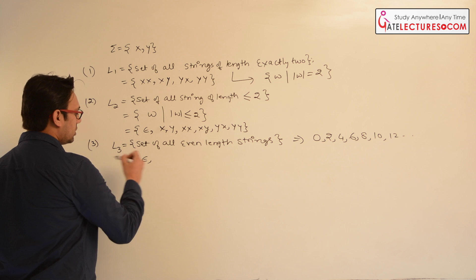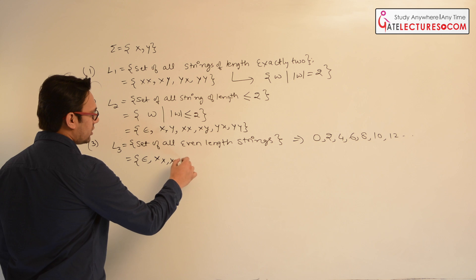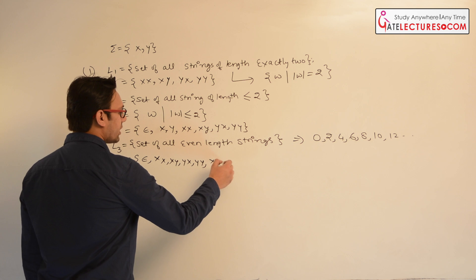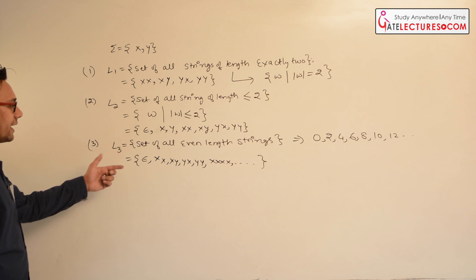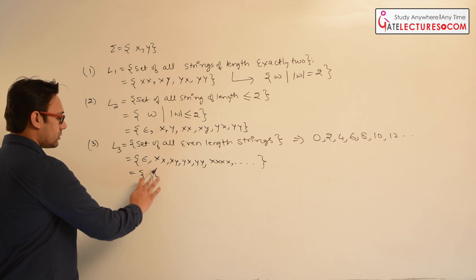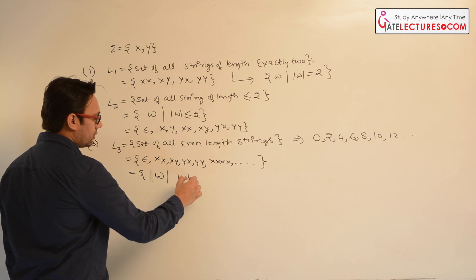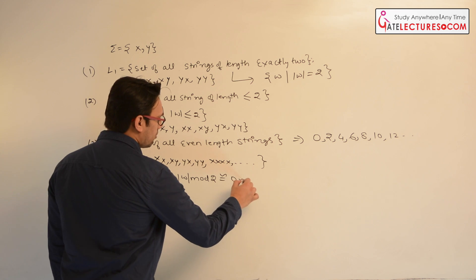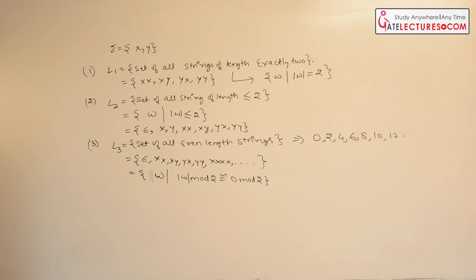Strings of length 0 will be epsilon. Strings of length 2 will be: xx, xy, yx, yy. Strings of length 4 will be xxxx and so on — all possible combinations. This language will be infinite. This language can also be written as {w | length of w mod 2 ≡ 0 mod 2}.